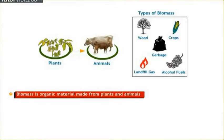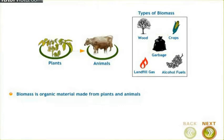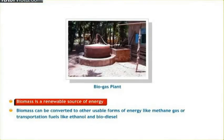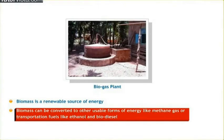Biomass is an organic material obtained from plants and animals. Some examples of biomass fuels are wood, crops, manure and some garbage. Biomass contains stored energy from the sun. Plants absorb the sun's energy in a process called photosynthesis. The chemical energy in plants gets passed on to animals and people that eat them. Biomass is a renewable energy source because we can always grow more trees and crops. Biomass can be converted to other usable forms of energy like methane gas or transportation fuels like ethanol and biodiesel.